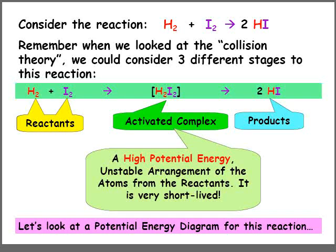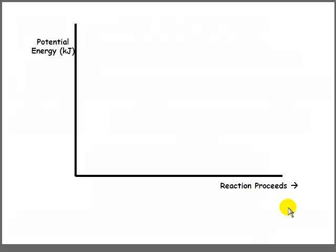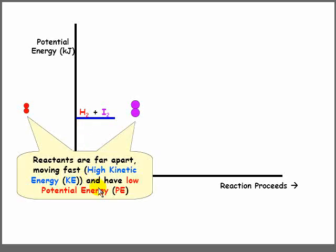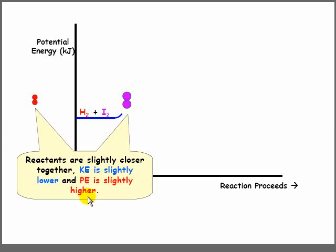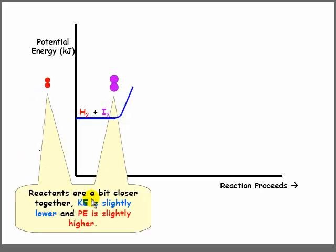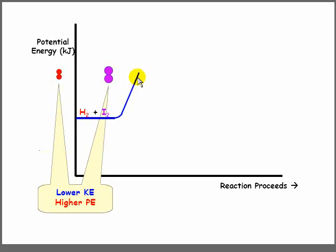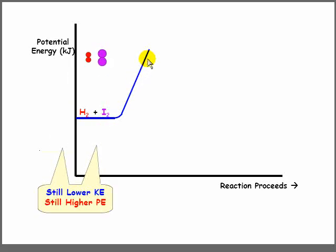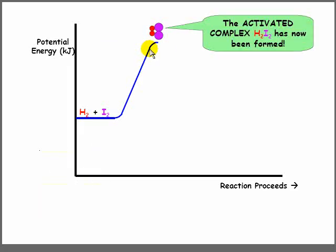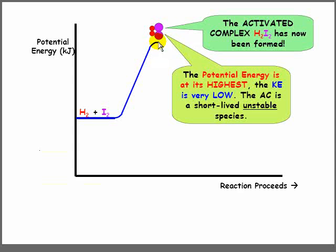Let's look at a potential energy diagram for this reaction. We start with the reactant molecules, H2 and I2. They're quite far apart, moving quite fast. So their kinetic energy is high and their potential energy is low. As they move closer together, their potential goes up and their kinetic goes down. You can see the potential going up by the blue line on the graph. Sooner or later, they collide and have now formed the activated complex, H2I2. The activated complex has very high potential energy — it is at its highest point — and the kinetic energy is very low.